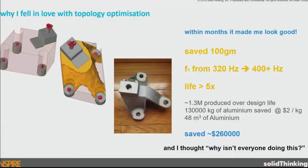So why did I fall in love with topology optimisation? It made me look good. I'd been at Ford for a few months, got hold of these tools and we had this problem engine mount, and I took 100 grams out of it — good weight saving. It was a problem mount because it was failing in durability. We got five times the design life and got the first frequency up into our preferred target range. We made about 1.3 million of those mounts and saved $260,000. And I thought, why isn't everyone doing this?